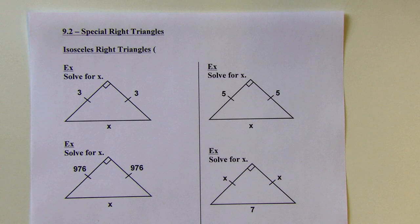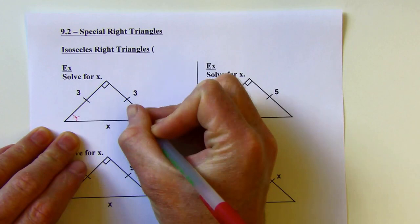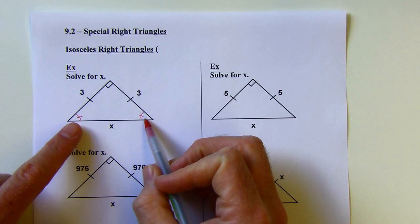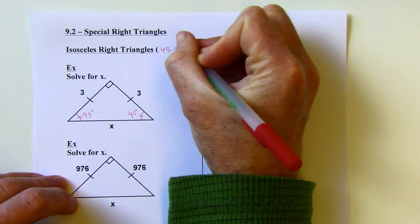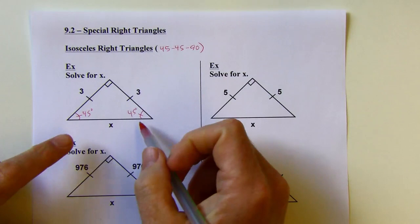Our first type of special right triangle is an isosceles right triangle. Isosceles just means you have two congruent legs. In an isosceles right triangle, the base angles are congruent. Since there's 90 degrees at the top, there's another 90 degrees split between the two base angles, so those are going to be 45 degrees. So these are sometimes referred to as 45-45-90 triangles.